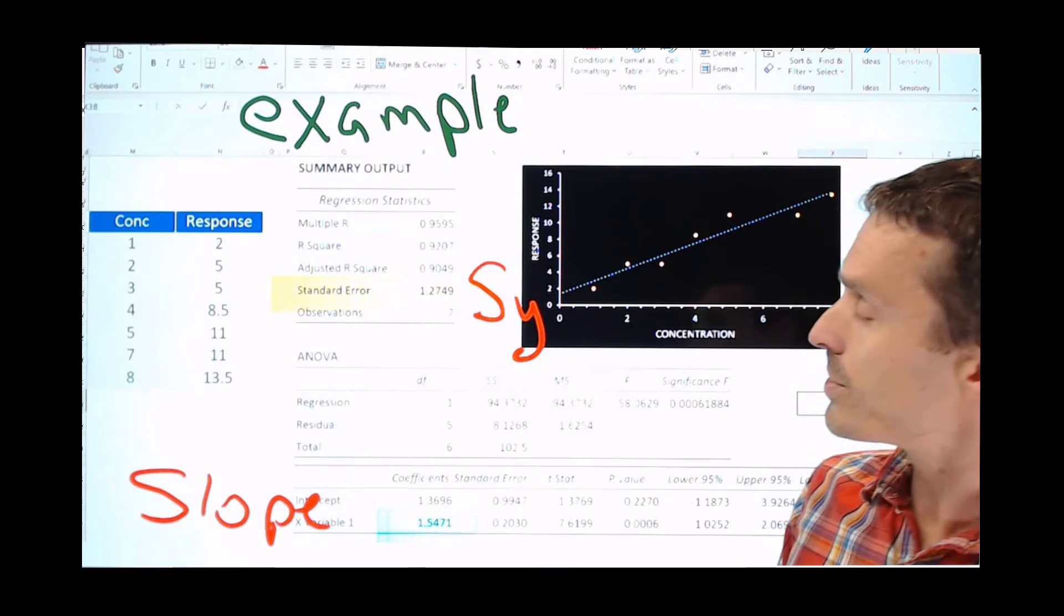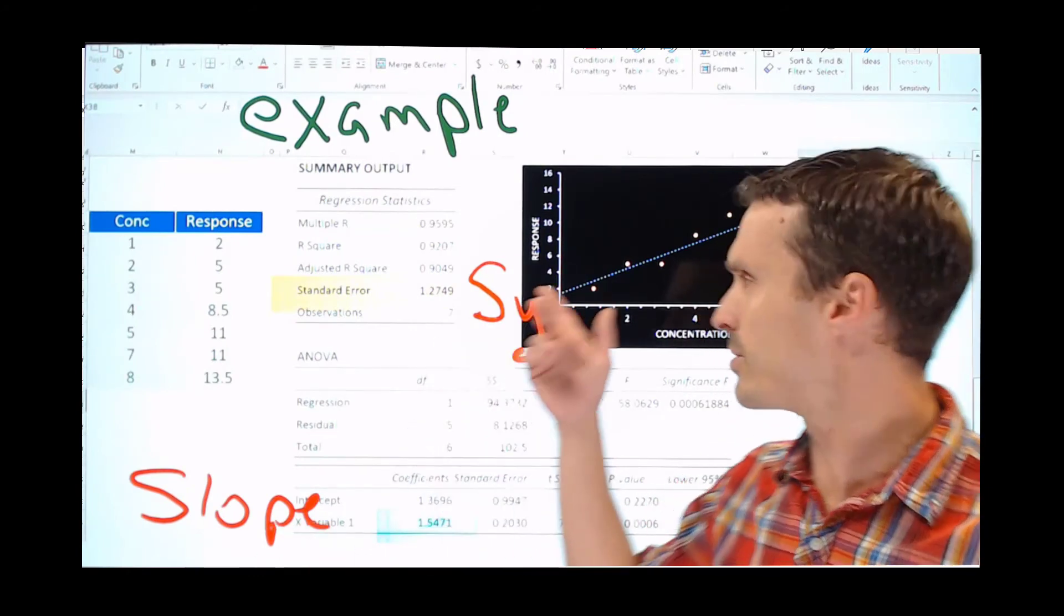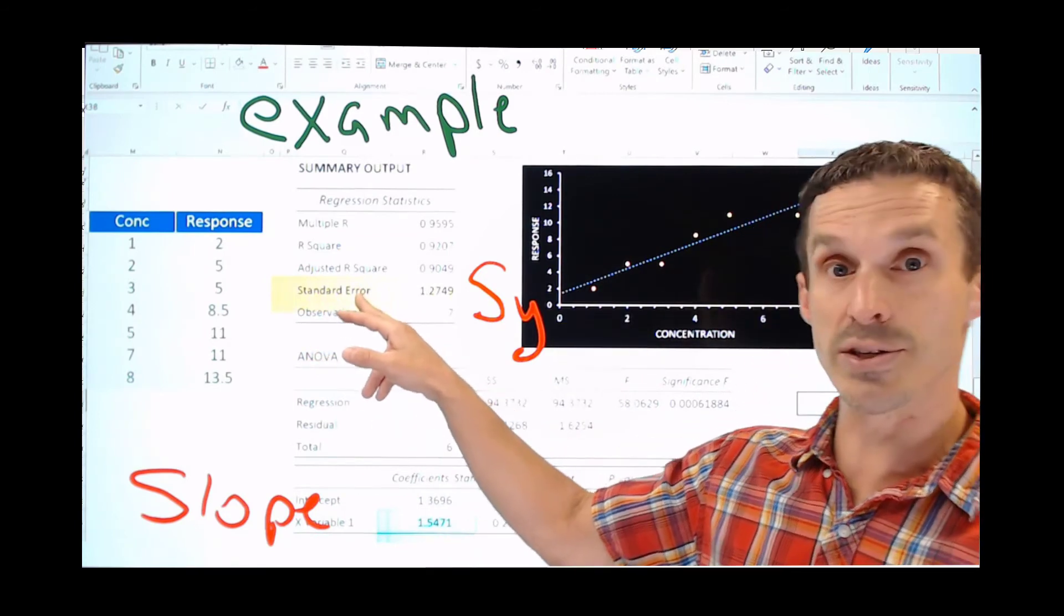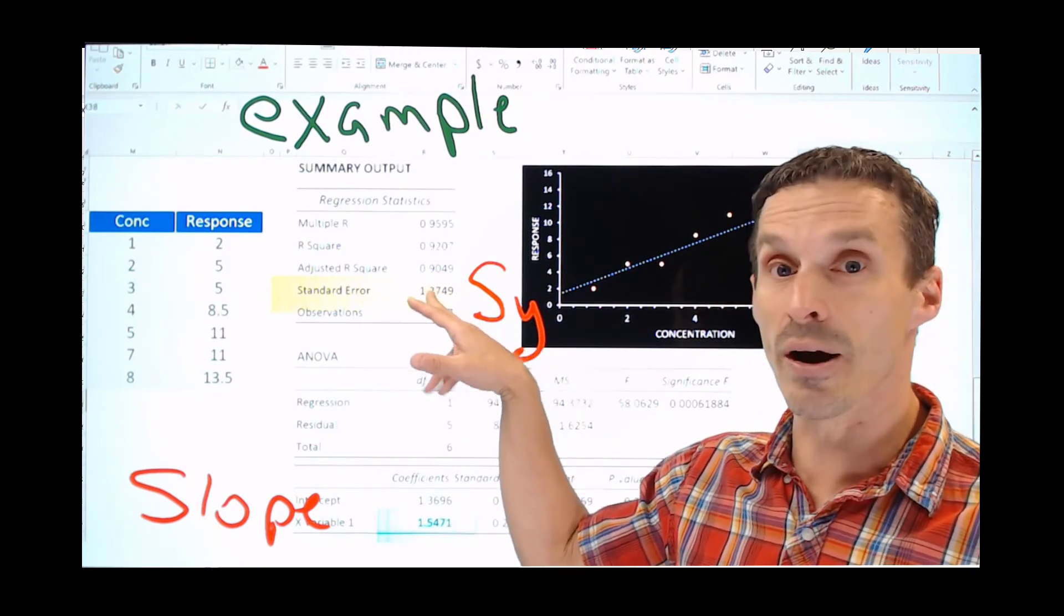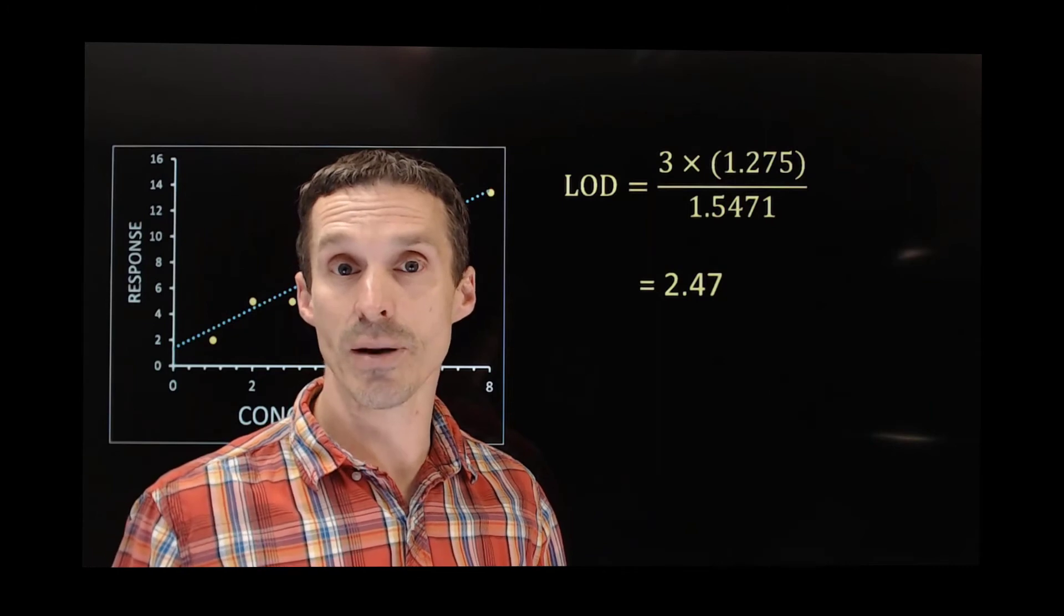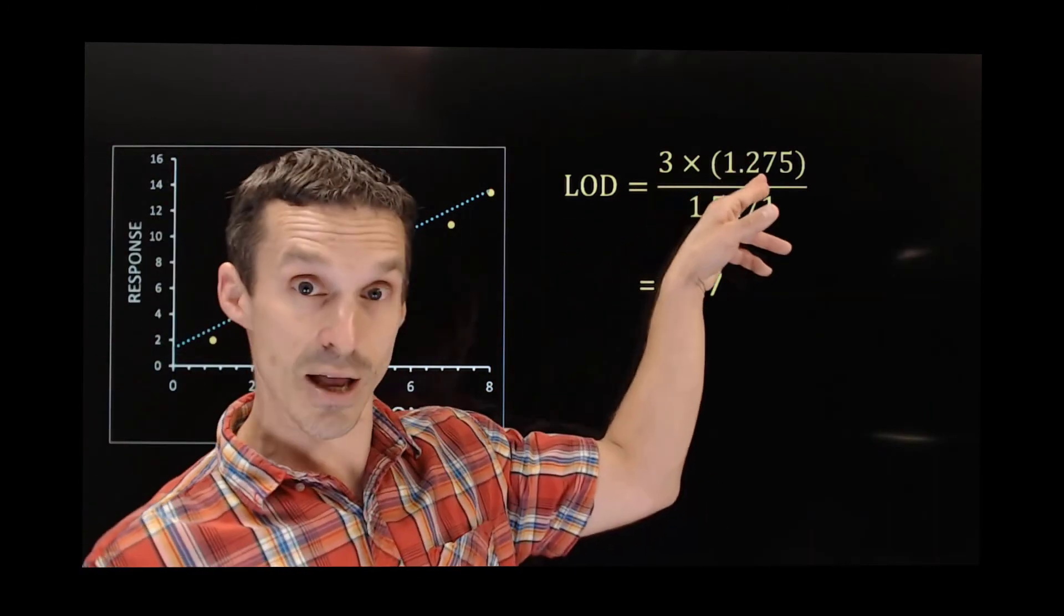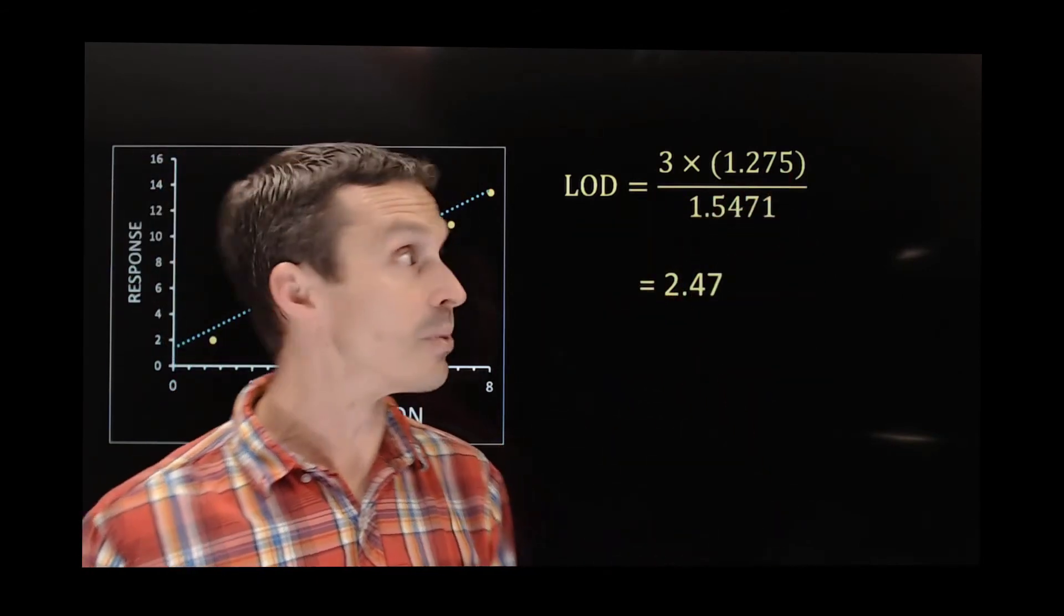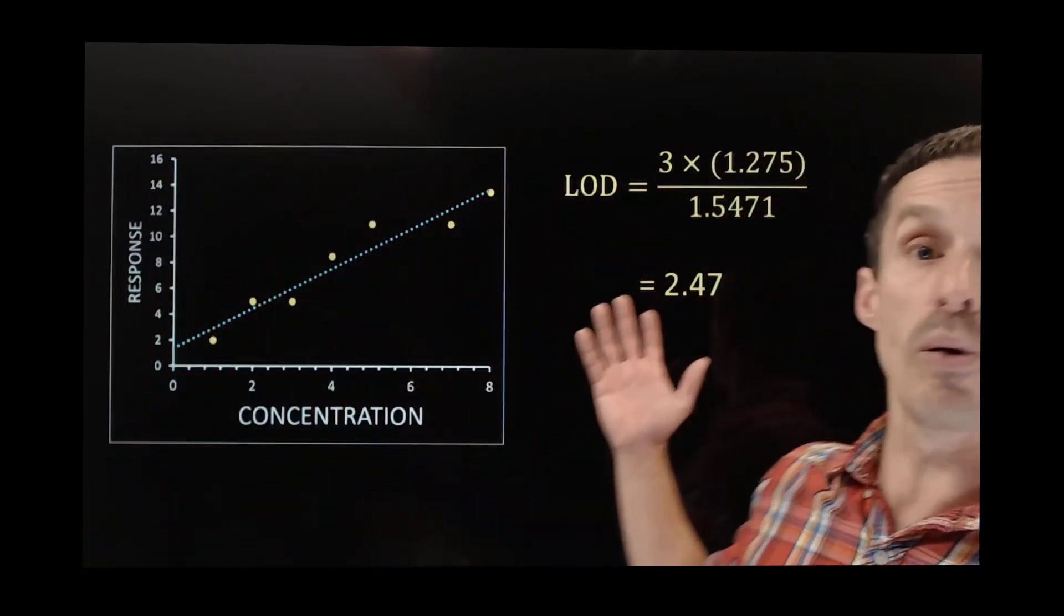So from our data output, this is actually what you're looking for. You simply need the slope, which I guess you could get immediately just by doing a simple regression, but you also need what we refer to as the standard error. It has the symbol S sub Y. So this is the error associated with that regression. Once you've obtained those numbers from your regression analysis, the limit of detection is defined as three times the standard error divided by the sensitivity or the slope. So you do your calculation from there, you get a number, 2.5.